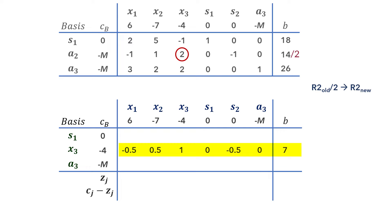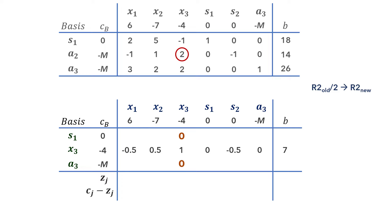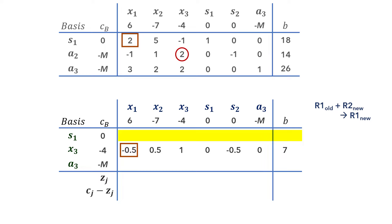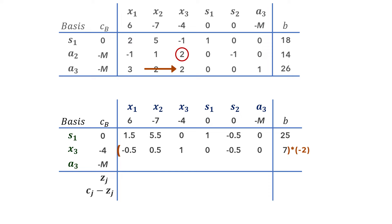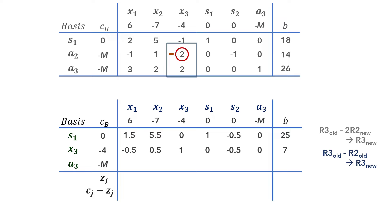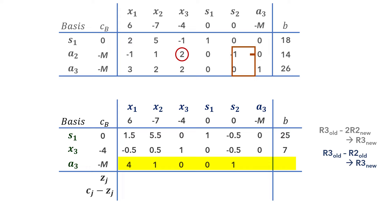Next we make the pivot column a unit column by zeroing all other entries using multiples of the pivot row. To make the entry in row 1 zero (currently negative 1), we add the pivot row to row 1: 2 plus negative 0.5 = 1.5, 5 plus 0.5 = 5.5, negative 1 plus 1 = 0, 1 plus 0 = 1, 0 plus negative 0.5 = negative 0.5, 0 plus 0 = 0, and 18 plus 7 = 25. To make the entry in row 3 zero (currently 2), we subtract 2 times the new row 2 from old row 3: for x1, 3 minus negative 1 = 4; 2 minus 1 = 1; 2 minus 2 = 0; 0; 1; 1. For the b column, 26 minus 14 = 12.